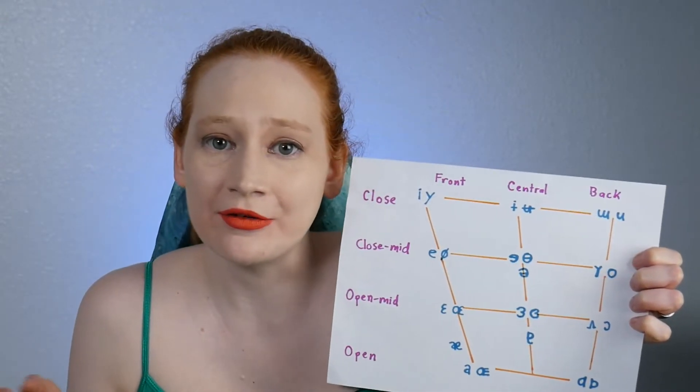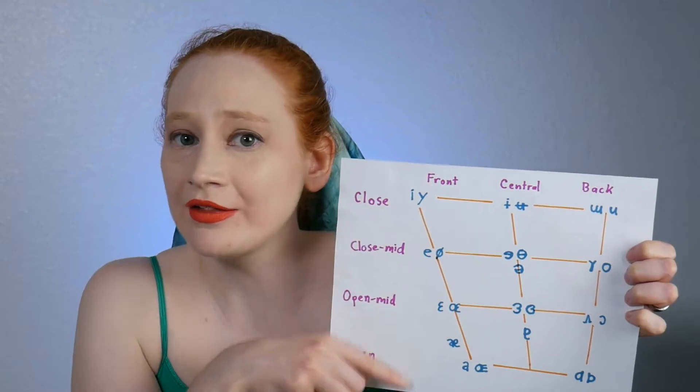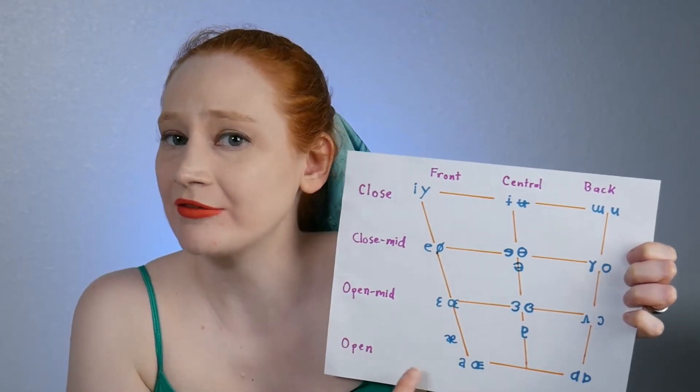So that is how the chart works: high-low, back-front, rounded-unrounded. Also, it is super handy if there is some vowel in a phonetic transcription you're looking at and you don't already know how to pronounce it — you can look at what vowels it's similar to and then just make the necessary adjustments to how you're pronouncing things to make that vowel sound come out of your mouth.